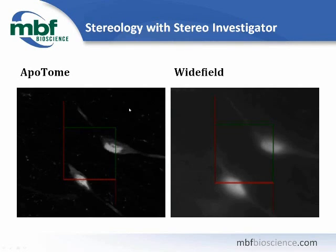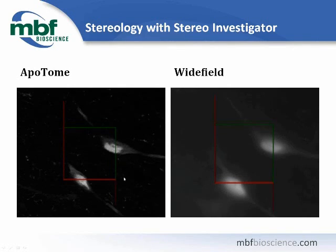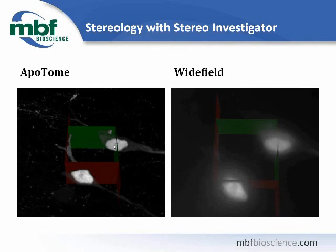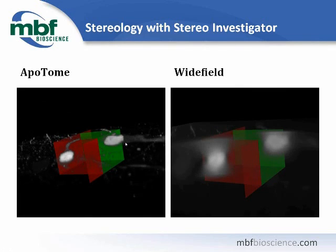If you're a Stereo Investigator user doing cell counts, we acquired an image stack in wide field mode and then with the Apatome and compared the differences. We have two cells interacting with our dissector. From top down both situations look pretty clear. When we rotate — this was done using 3D solids in the automatic counting module — by removing out-of-focus light you get rid of the haze that happens with a bright soma. Making the decision about where the cell top comes into focus within your dissector is easier using an Apatome. It's easier to identify the cell top in the Apatome image than in the wide field image where the soma casts a broad halo.